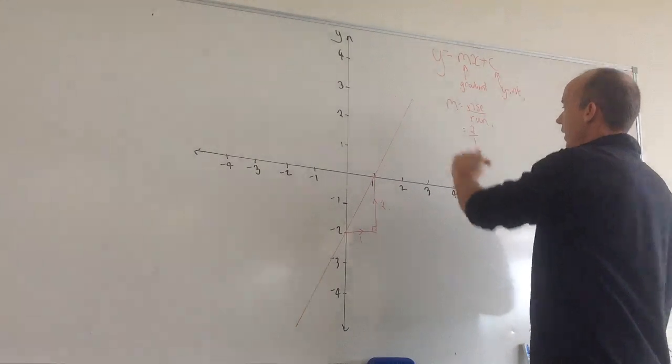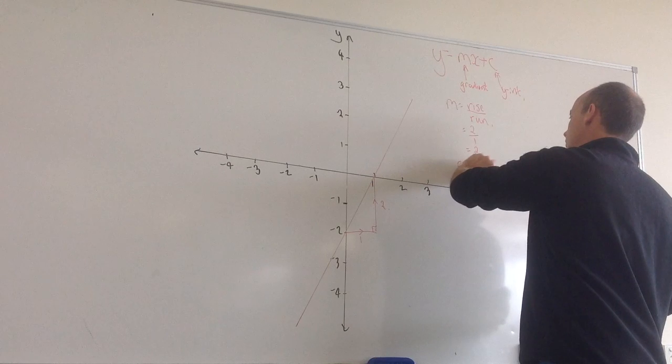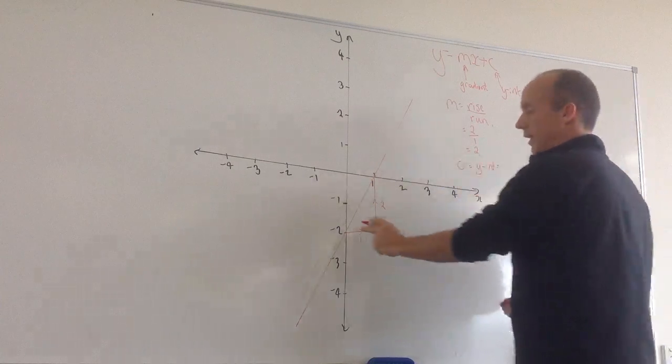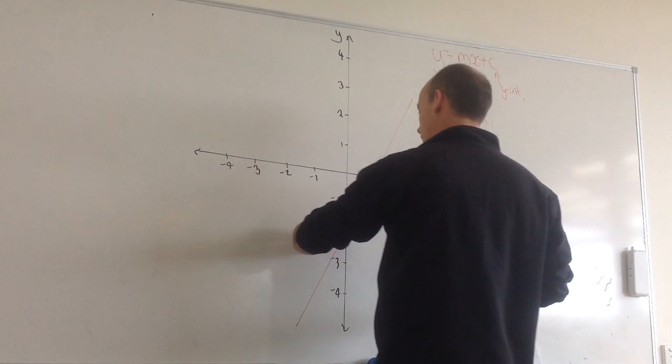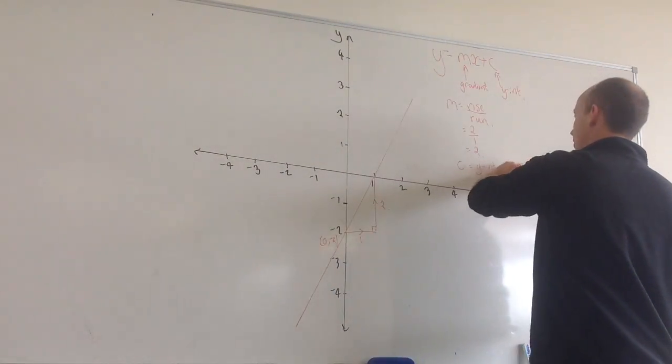And then this one's quite easy. My c value is equal to my y-intercept. And we can just read that off. So my y-intercept is at minus two. So c is equal to minus two.